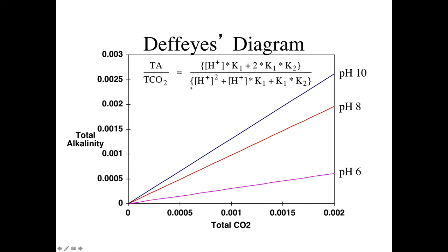If you go to pH 8, the line is above pH 6 with a steeper slope — the alkalinity increases faster as CO2 increases. The pH 7 to 8 lines have a slope of about 1 to 1, the pH 6 line has a slope considerably less than 1, while the pH 8 line has a slope of about 1.5. The slopes come directly out of this relationship.